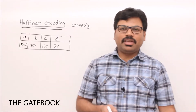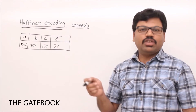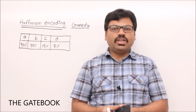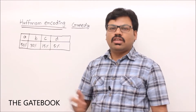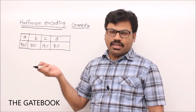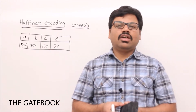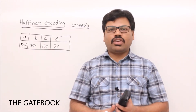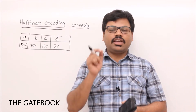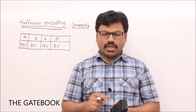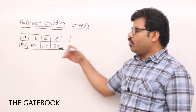Now we'll see one more problem related to the greedy method — that is Huffman encoding. Here also we have a greedy choice. Before that, let's review the previous two problems. The first was the activity selection problem, which had a greedy choice. The second was the fractional knapsack problem, where the greedy choice was always to pick the object with the highest pi by wi value.